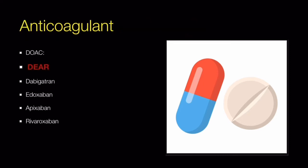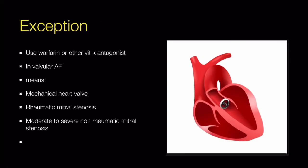Regarding the choice of anticoagulant: all guidelines favor DOACs (direct oral anticoagulants) or NOACs. These drugs can be remembered by the mnemonic DEAR — Dabigatran, Edoxaban, Apixaban, and Rivaroxaban. These newer drugs are used in all cases except valvular AF, where vitamin K antagonists like warfarin or acenocoumarol must be used. Valvular AF refers to patients with mechanical heart valves, rheumatic mitral stenosis, or moderate-to-severe non-rheumatic mitral stenosis.